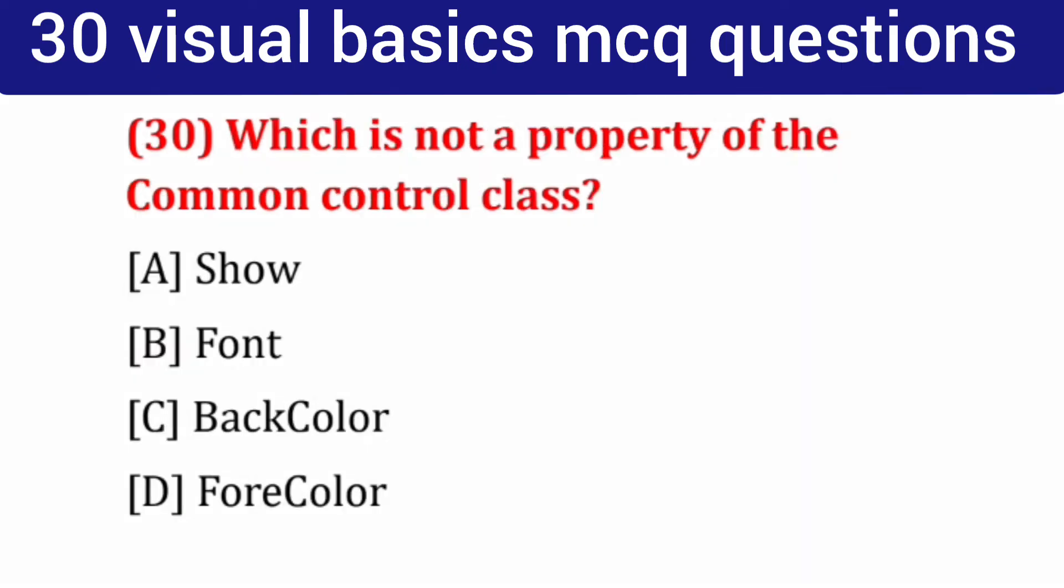Question number 30: Which is not a property of the common control class? Options: show font, back color, fore color. Correct answer: show.